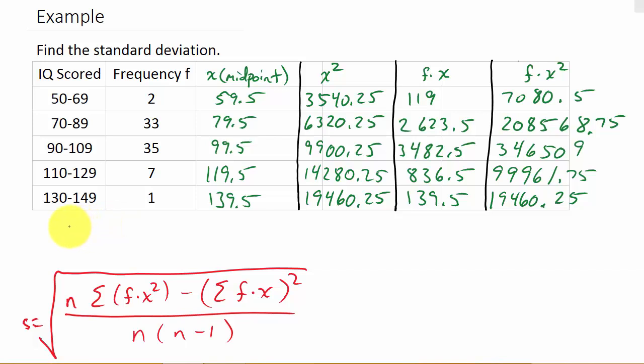So, let's go ahead and get these values. So, n, that's the sum of the frequencies. And that is 78. Then, I need the sum of f times x. That's the sum of this column. So, that's 7,201 when we add those up. And then, I need the sum of f times x squared. And so, I sum that up. That is 681579.5. And it looks like I got everything on the screen.